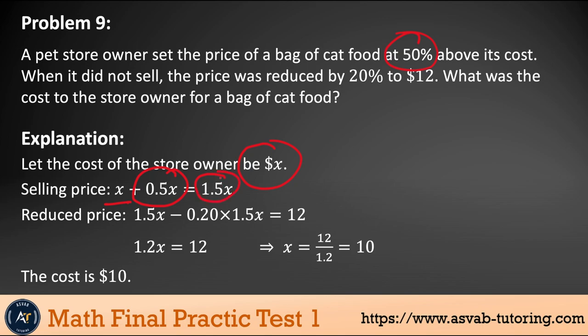Now this 20% off on that 1.5x. If you subtract 20% of that, that gives you 1.5x minus 0.20 times 1.5, that equals $12. Using that relation, that gives you 1.2x equal to $12. If you solve for x, that gives you 10. So the correct answer was $10. The owner actually bought the cat food with $10, with 50% above the price and then bring it down to 20% and that was $12.